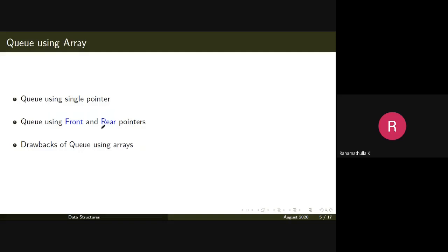We've been talking about a queue having a front pointer and a rear pointer. Let's take a simpler approach — a queue having only a single pointer. A queue can be implemented in many different methods. The first method uses only a single pointer; instead of front and rear, we have only one pointer, like a stack, but still implement the first-in first-out structure.